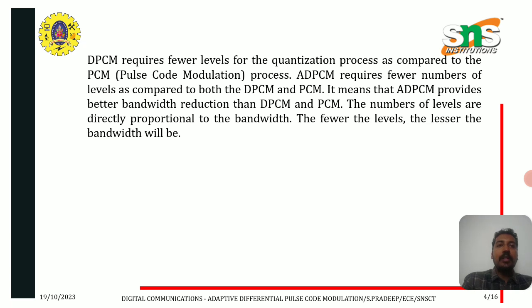DPCM requires fewer levels for the quantization process as compared to the pulse code modulation process. ADPCM requires fewer number of levels as compared to both the DPCM and PCM models. This means that ADPCM provides better bandwidth reduction than DPCM and PCM. The number of levels is directly proportional to the bandwidth — the fewer the levels, the lesser the bandwidth will be.